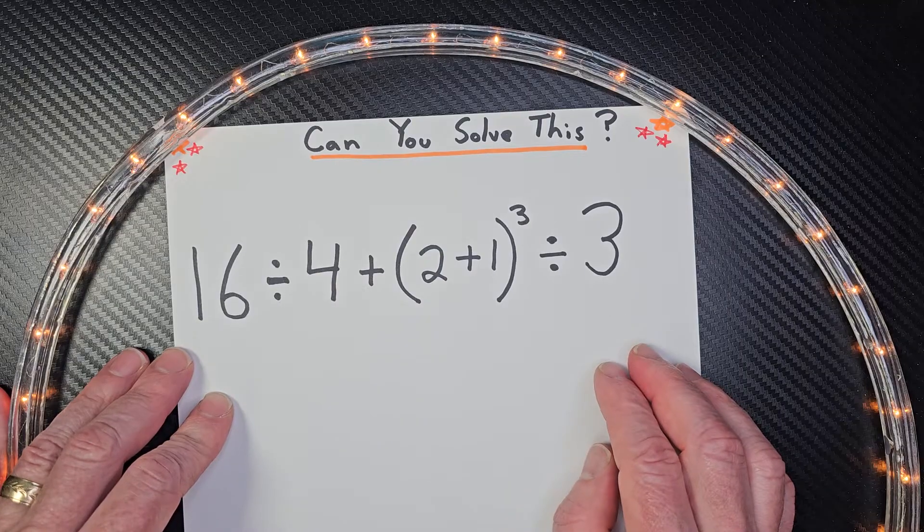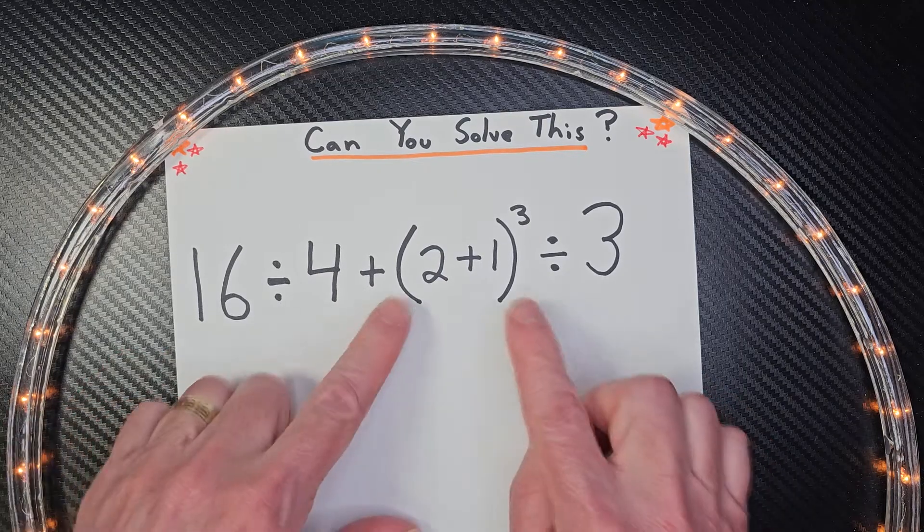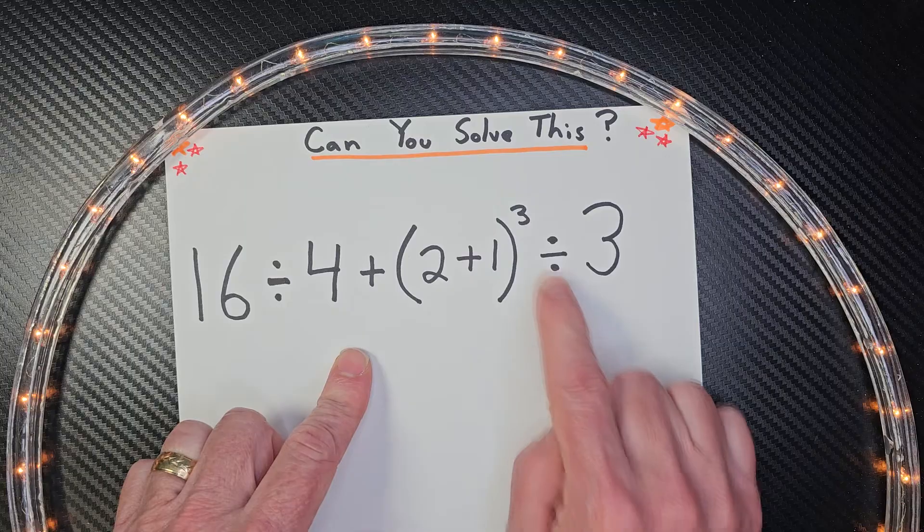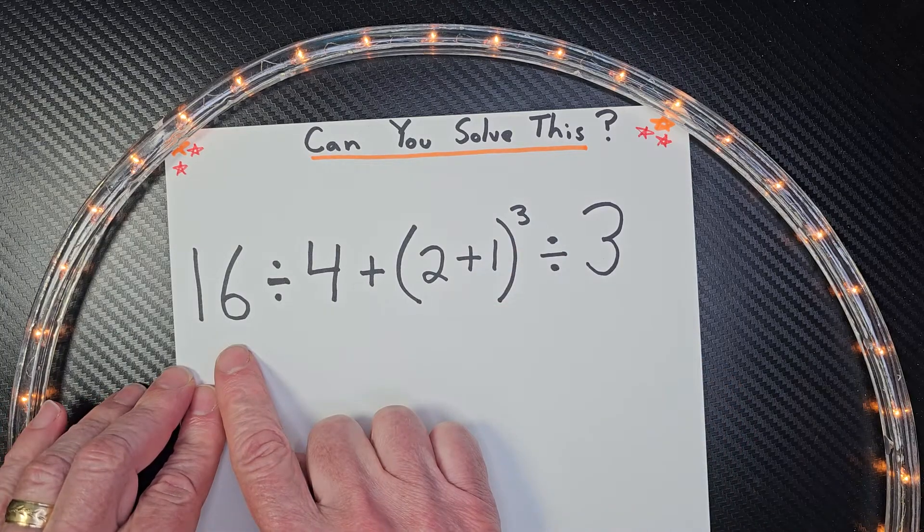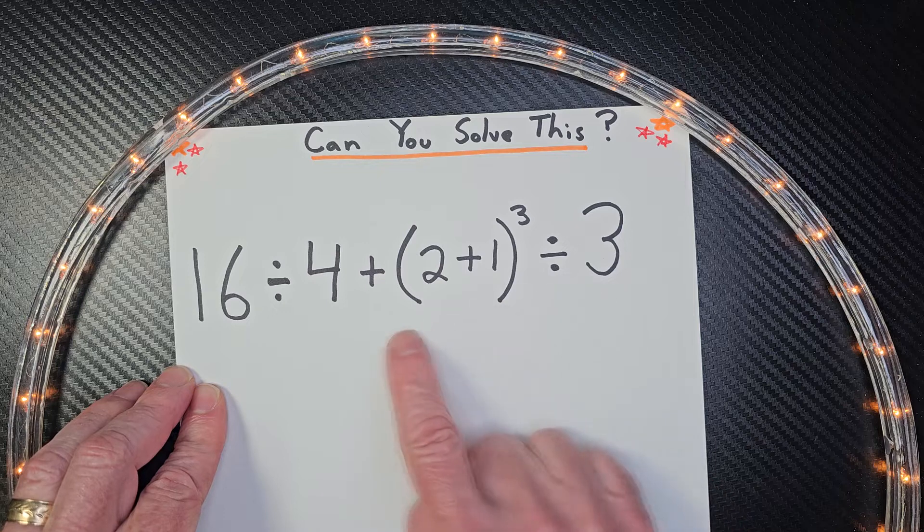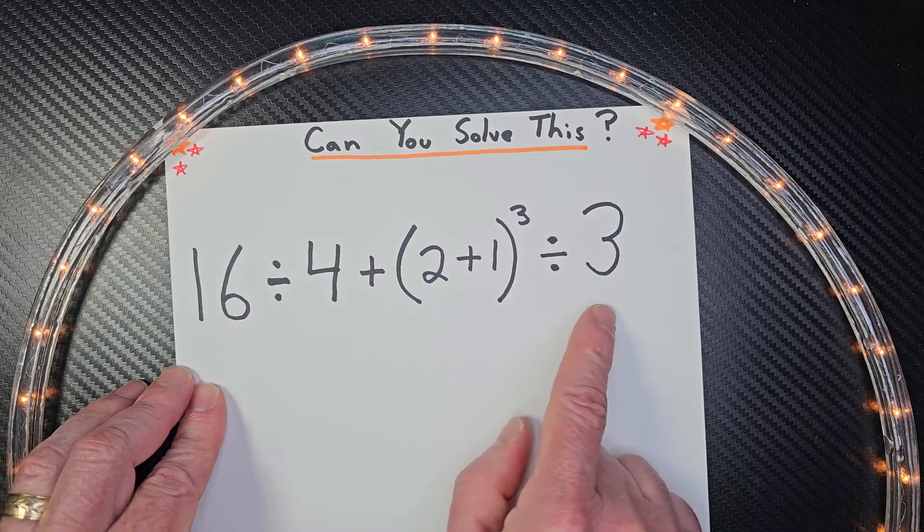All right, let's go ahead and begin. Remember, with order of operations, you do what's inside parentheses first. The second step is exponents. Third step is multiplication and division from left to right, and then our last step is addition and subtraction from left to right.